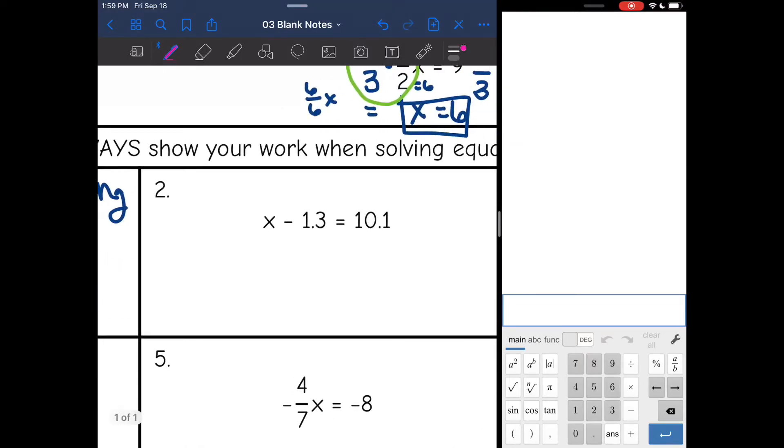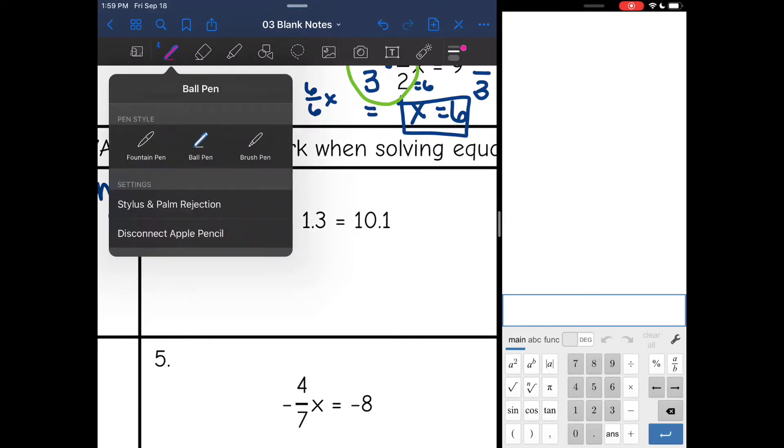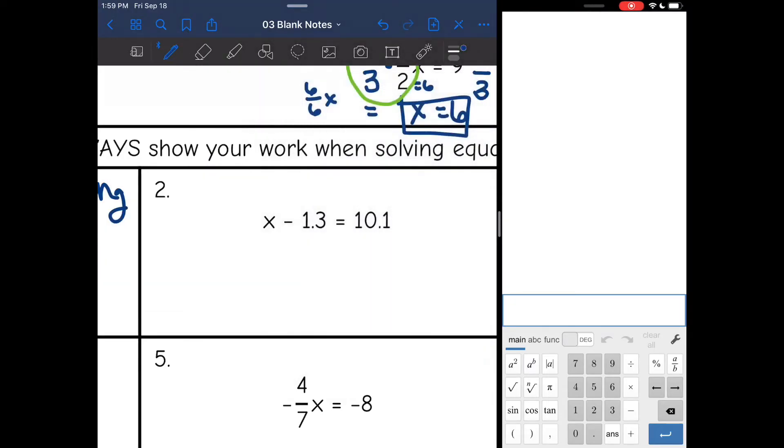We're going to ask those same two questions here. First, what is happening to x? We are subtracting 1.3 from x. And the opposite of subtracting 1.3 would be adding 1.3. So I'm going to add 1.3 to both sides. And that zeroes out right here, and I get to bring the x down. Now x is by itself, and 10.1 plus 1.3 is 11.3.